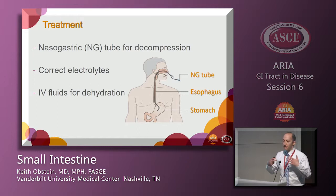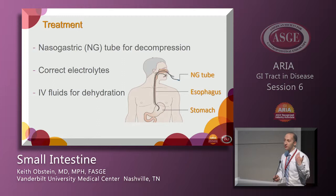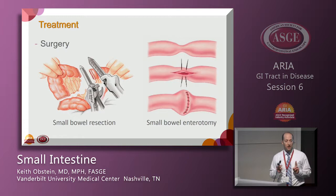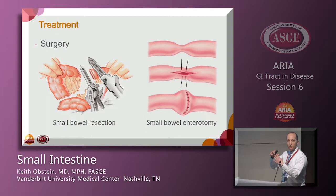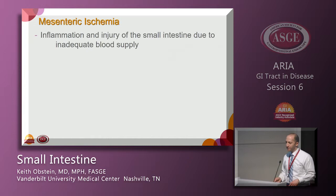Surgical options include resection of the obstructed bowel segment or an enterotomy — cutting along the length of the stricture and suturing horizontally to expand the lumen, rather than re-anastomosing in the same direction. This Heineke-Mikulicz approach expands the narrowed segment.